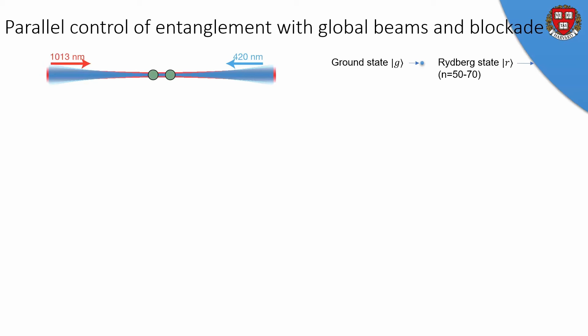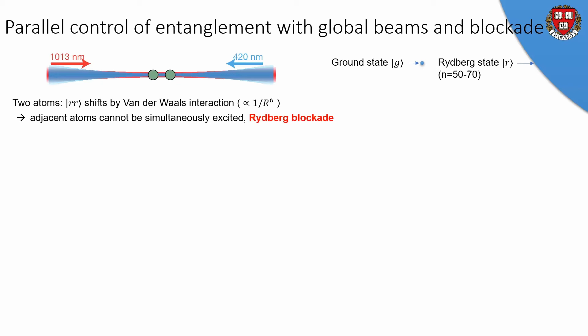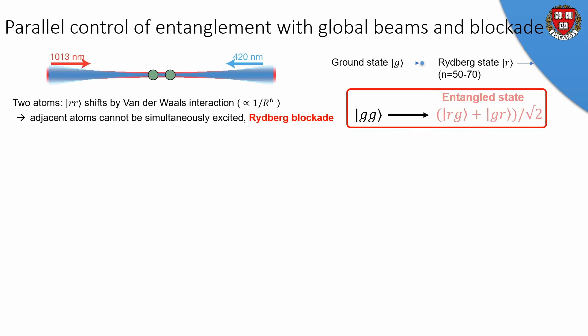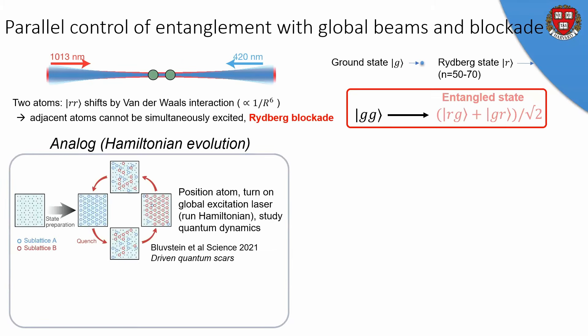What's so interesting about Rydberg states is if we put two atoms next to each other and simultaneously try to excite both of them, they'll both simultaneously try to get excited into the Rydberg state, but they both can't go. They can't both go because of the so-called Rydberg blockade mechanism, where there's a very large energy penalty if two atoms are simultaneously in the Rydberg state. If you have two atoms next to each other in the ground state and you pulse on this Rydberg laser, they'll compete and go into a symmetric entangled state of Rydberg-ground plus ground-Rydberg. This generates entanglement just using a simple global laser pulse.